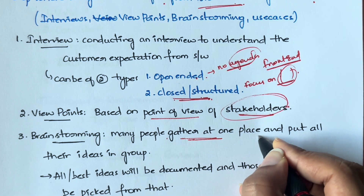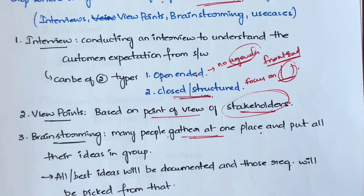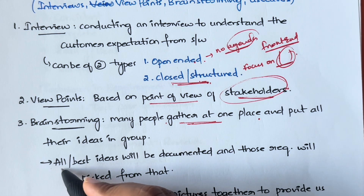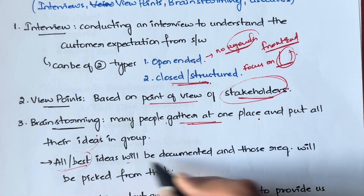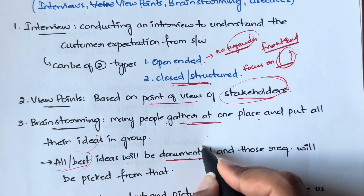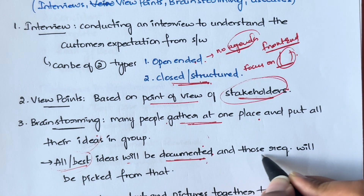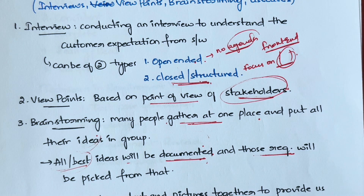Next is brainstorming. In brainstorming, many people gather in one place and put all their ideas into the group - whatever they think and whatever they need. They just sit and talk about it. After talking, all the ideas - or the best ideas - are documented, and from that documentation you pick the requirements which you think are most important.